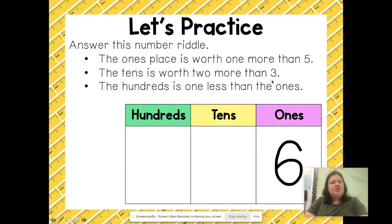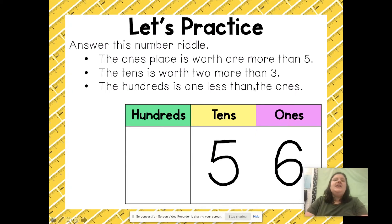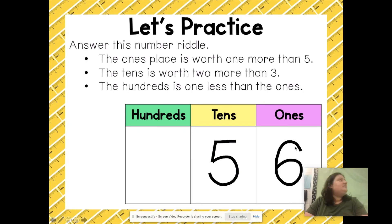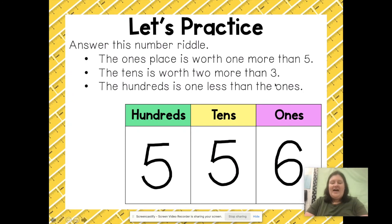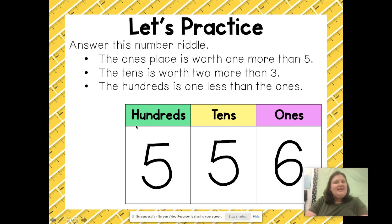The hundreds is worth one less than the ones — so six minus one equals five. My mystery number is 556. Let's exchange those digits for place value blocks.